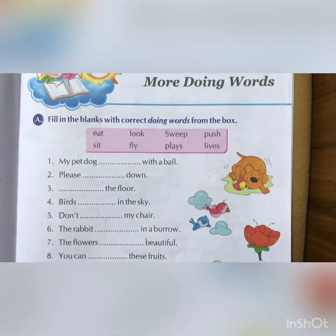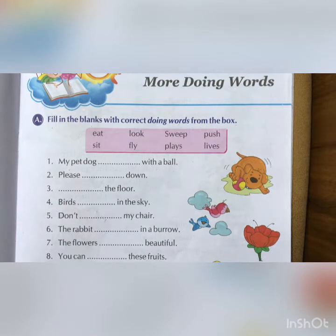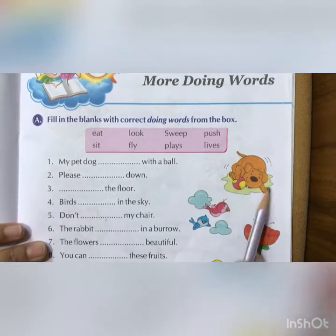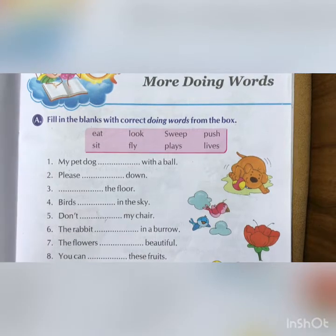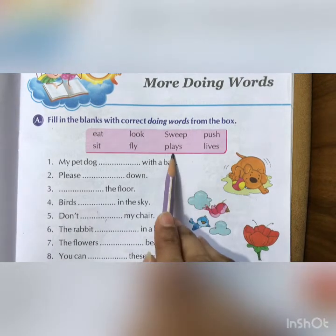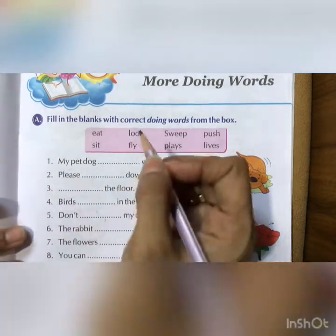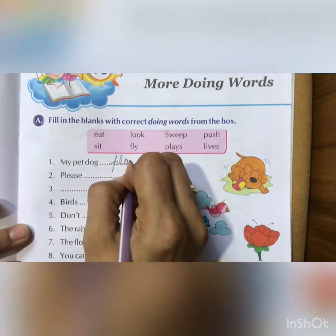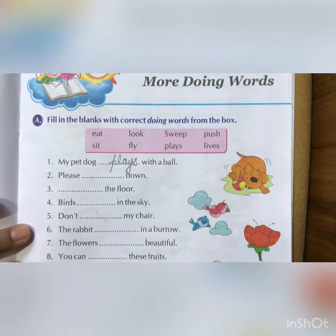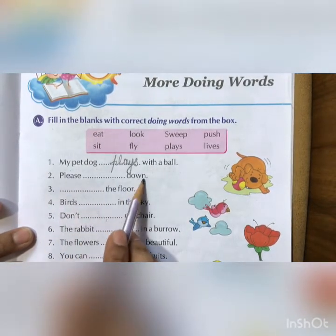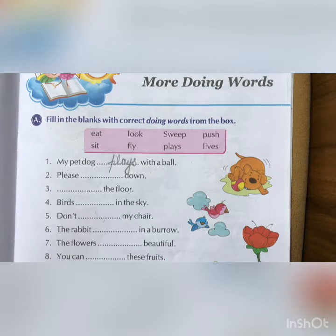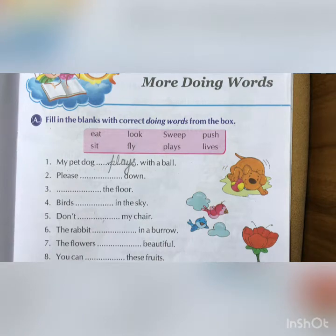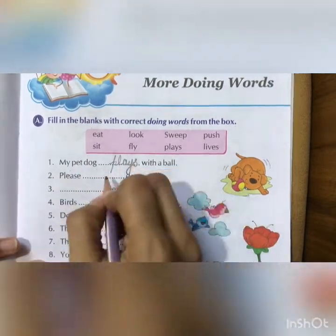Children, I always say reading is very important, so you should always read with me. Look here and observe the picture also. My pet dog — here is a pet dog — with a ball. What are we doing with a ball? Play. Right. So, my pet dog plays with a ball. Number two: Please blank down. If we request someone to get down, what will we say? Sit down. So, please sit down.